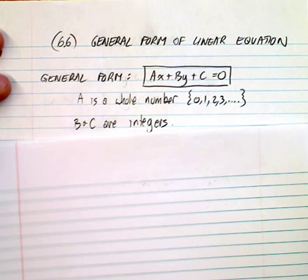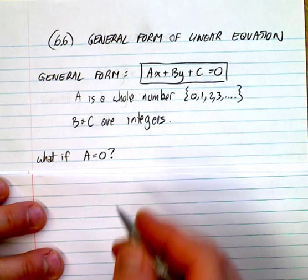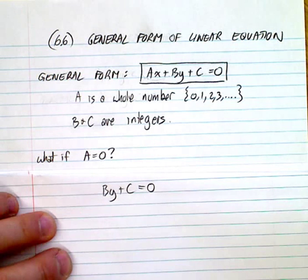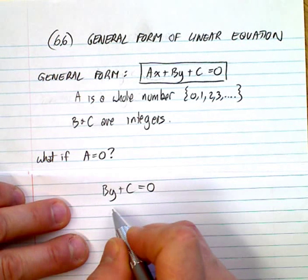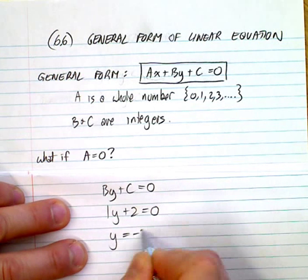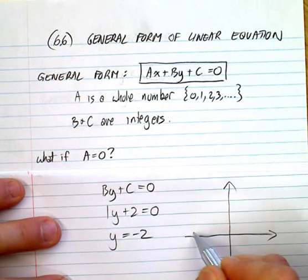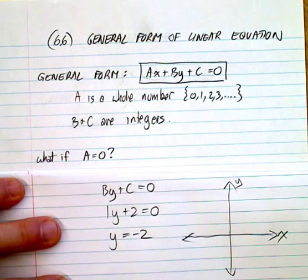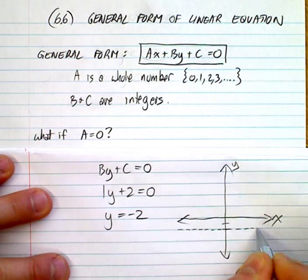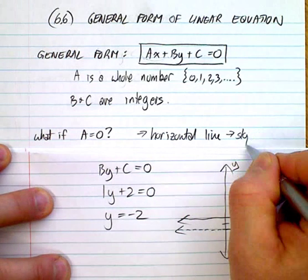Now let's look at special cases. What if 'a' equals zero? If a equals zero, the ax term disappears and you're left with by plus c equals zero. For example, 1·y plus 2 equals zero gives y equals negative 2. On an x-y axis, y equals negative 2 is a horizontal line with a slope of zero.